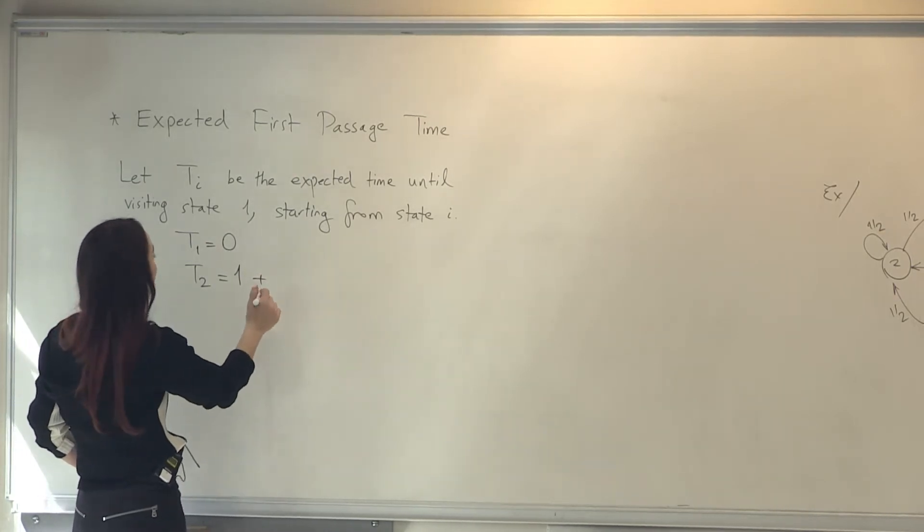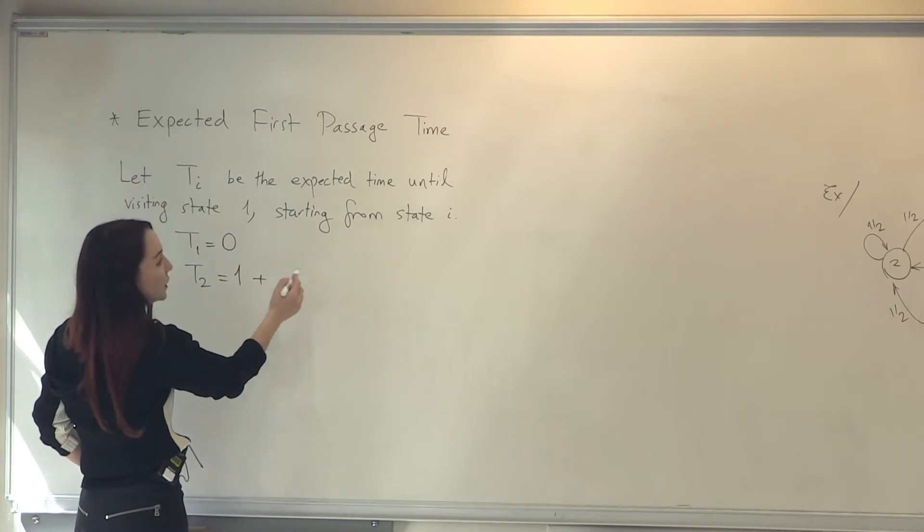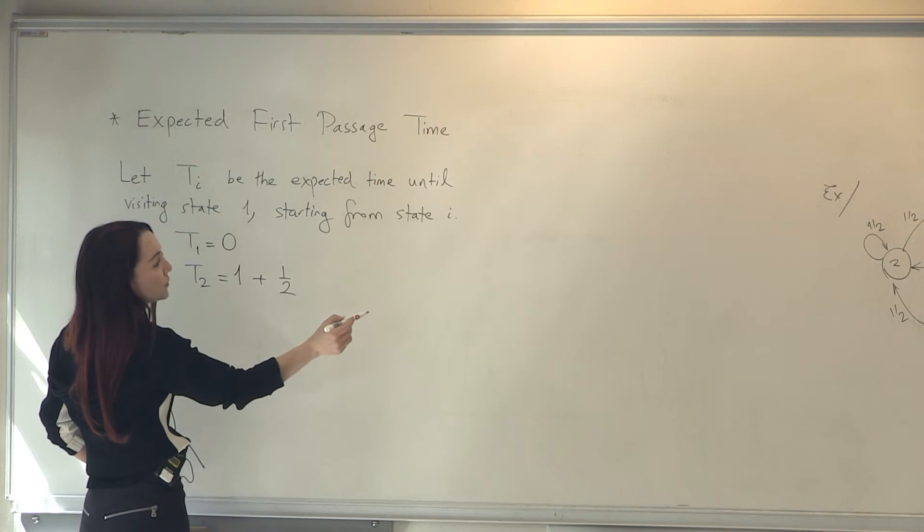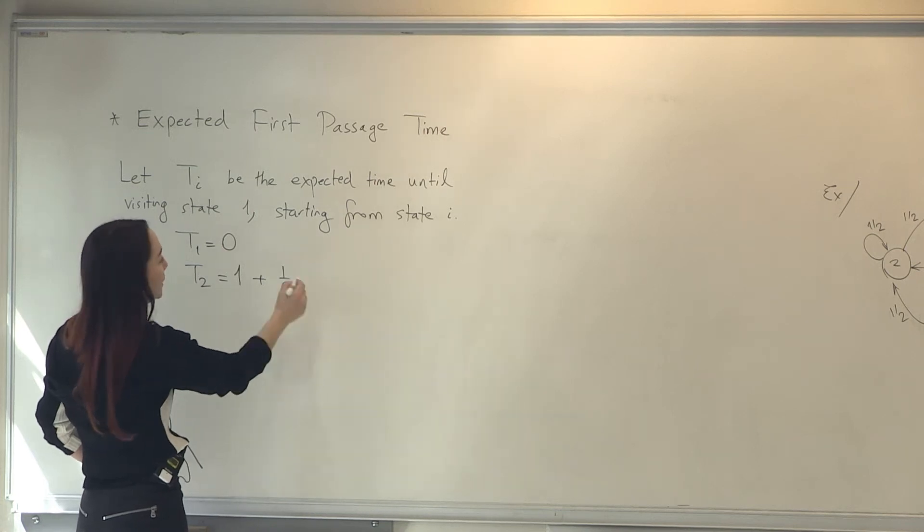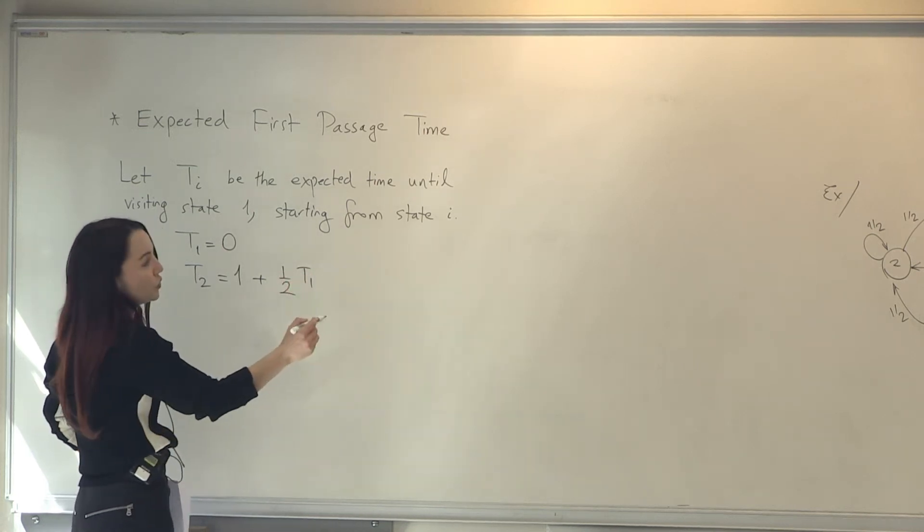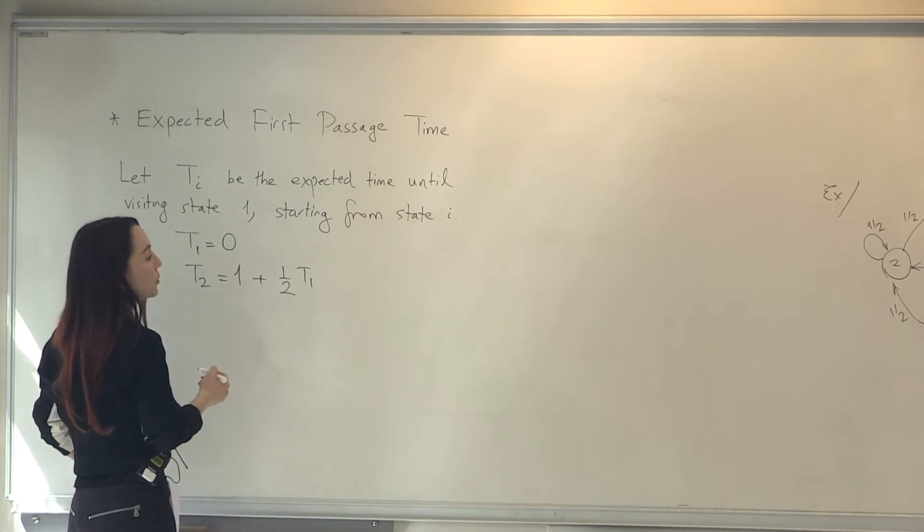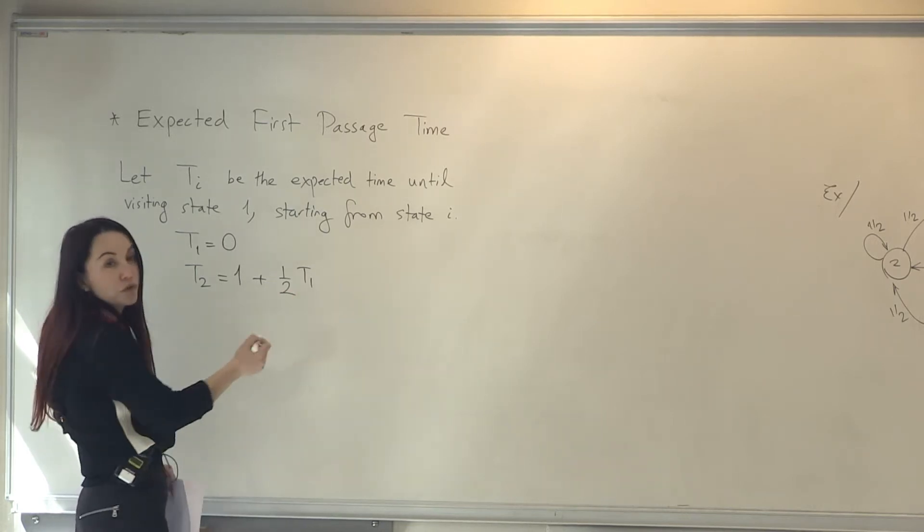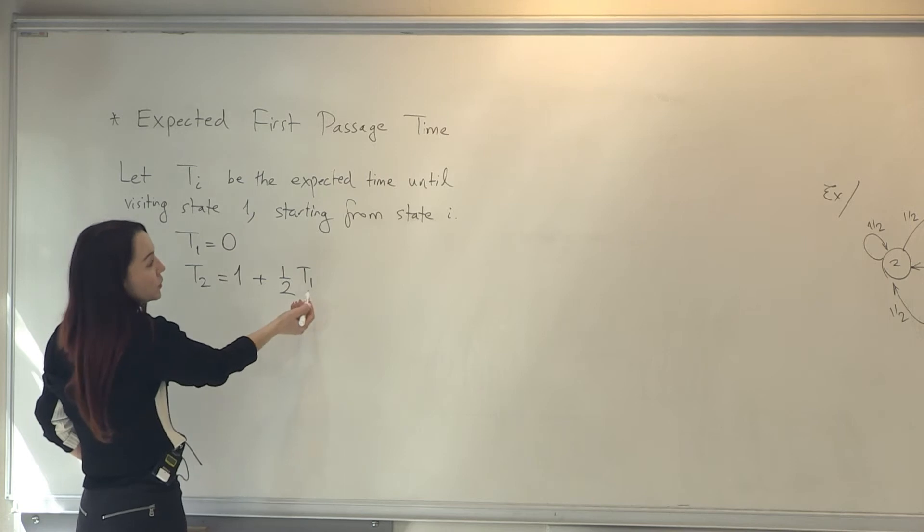So in that example, 1 plus from 2, we can go directly to 1 with probability 1 half. In that case, the further number of transitions is going to be T1, which is 0.